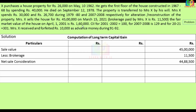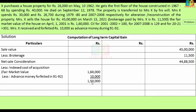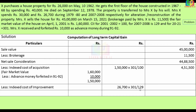We index Rs. 1,60,000 as: 1,60,000 × 301 ÷ 100 = Rs. 4,81,600. For improvements, the Rs. 40,000 and Rs. 30,000 are before April 1, 2001, so they are included in the FMV. The Rs. 26,700 improvement in 2007-08 is indexed as: 26,700 × 301 ÷ 129 = Rs. 62,300. We also deduct Rs. 10,000 advance money forfeited. So the net capital gain is approximately Rs. 39,74,700. This is the capital gain.